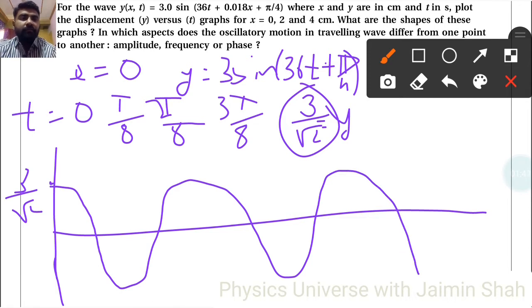Next, when x equals 2 centimeters, our graph uses 0.018 times 2, which is 0.036, so 0.036 plus π/4.